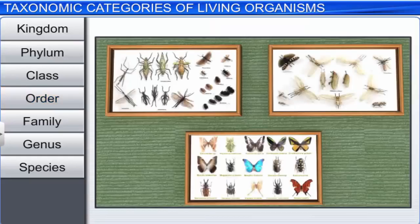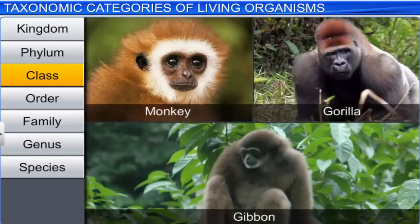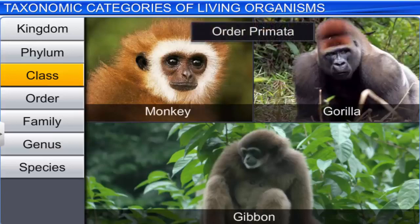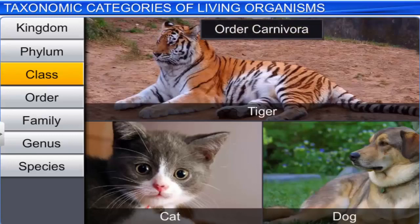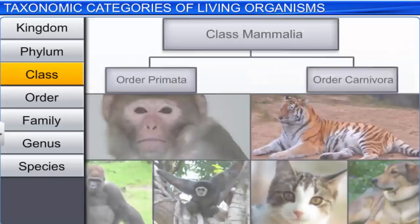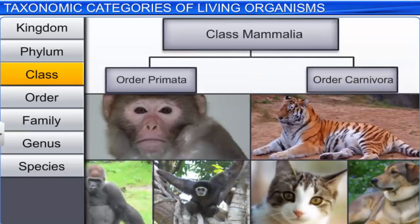The next category is Class, which consists of related orders. Consider the two orders, Primata and Carnivora. Order Primata includes the monkey, the gorilla, and the gibbon. While order Carnivora includes animals like the tiger, the cat, and the dog. Although these two orders are different, they are classified under the class Mammalia.